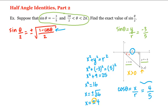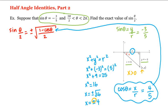Therefore, cosine of theta is equal to positive four-fifths, which we can plug into our half-angle formula. But there's one more issue with this formula — what does this plus or minus mean? Does that mean there are two solutions? No. We're going to choose either the positive or the negative depending upon the quadrant that theta over two lies in. If sine of theta over two in that quadrant is positive, we choose positive; if it's negative, we choose negative.